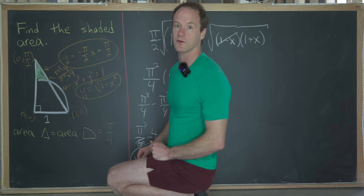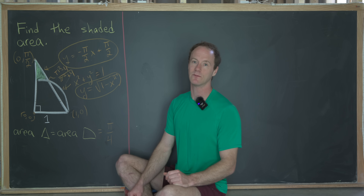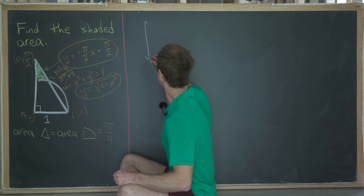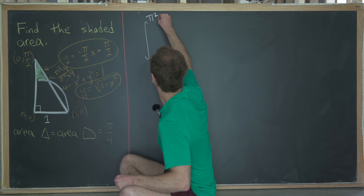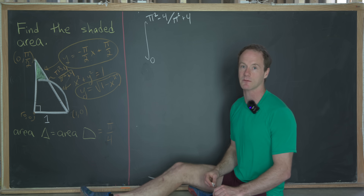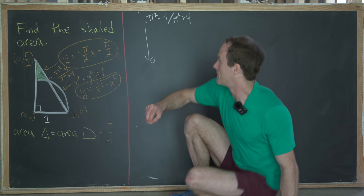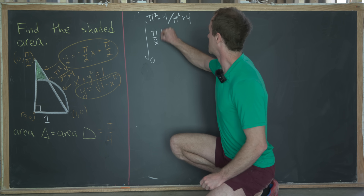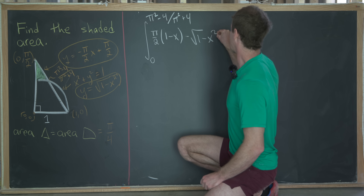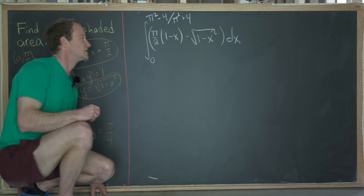Now we're ready to set up the integral. We integrate from 0 to α — where α = (π² - 4)/(π² + 4) — of the top curve minus the bottom curve. I'll write the top curve in its factored form as π/2 · (1 - x), and subtract the bottom curve √(1 - x²), all times dx.